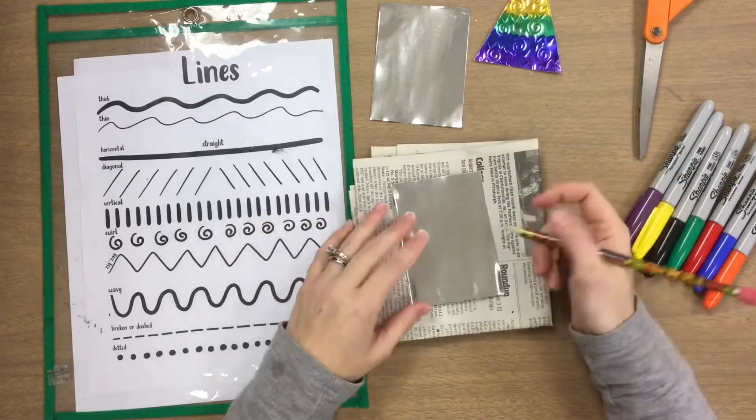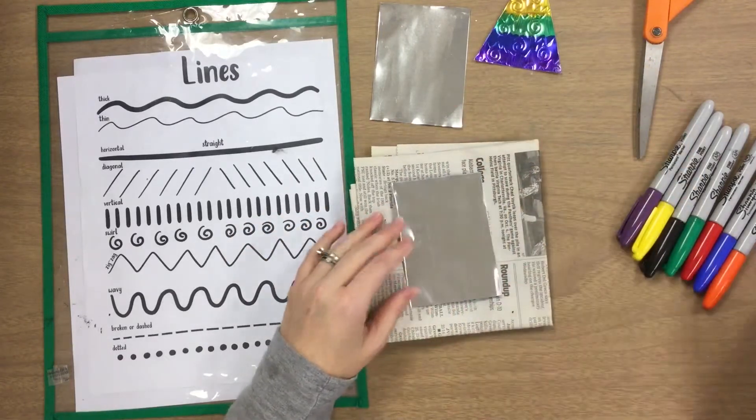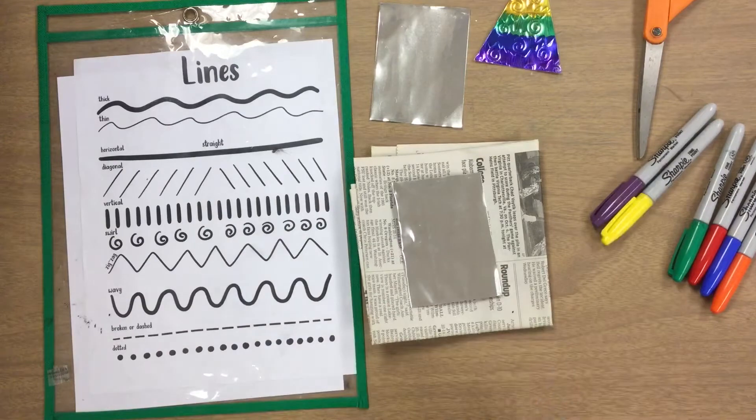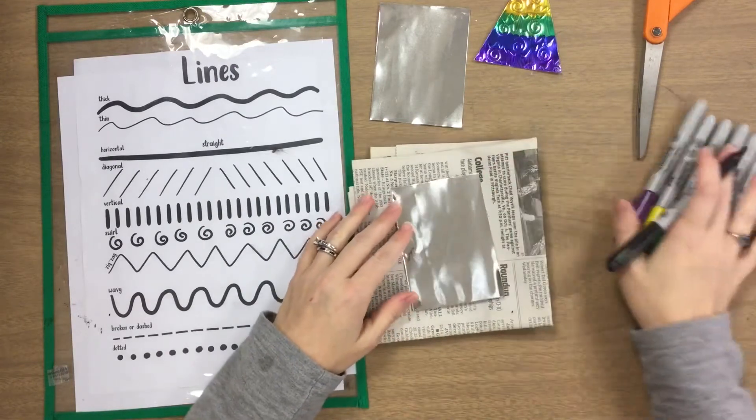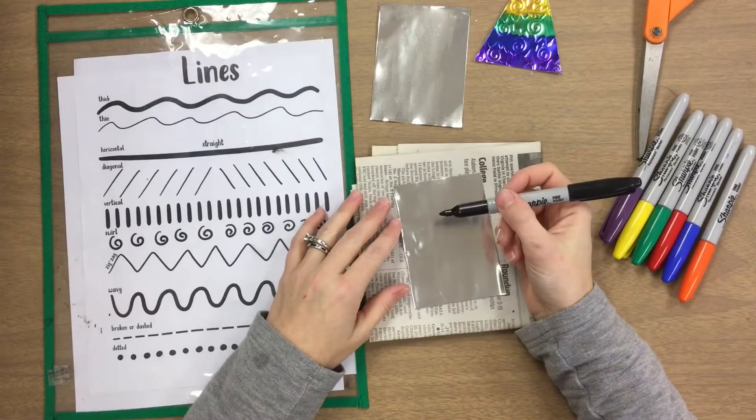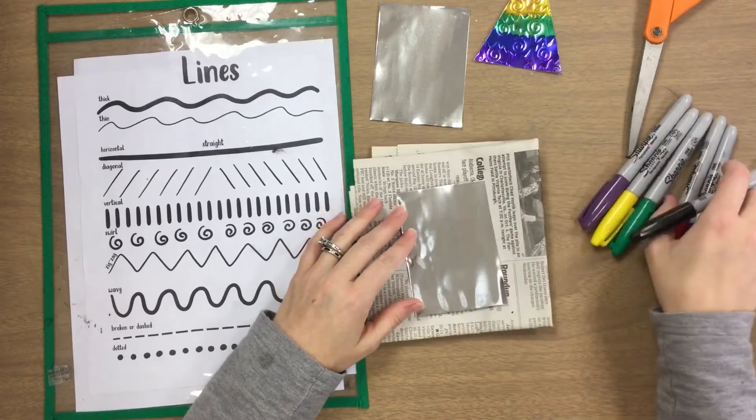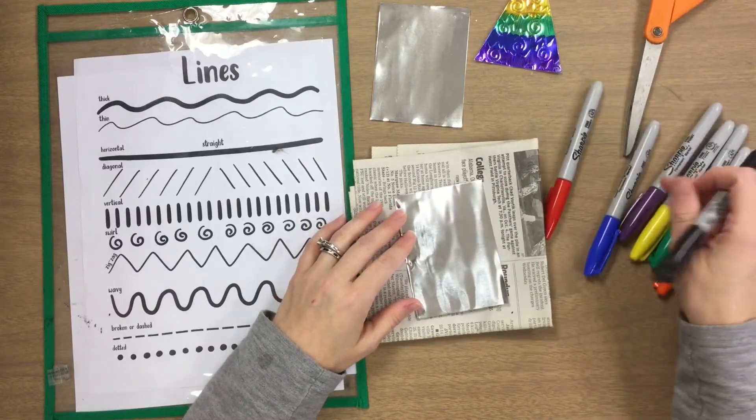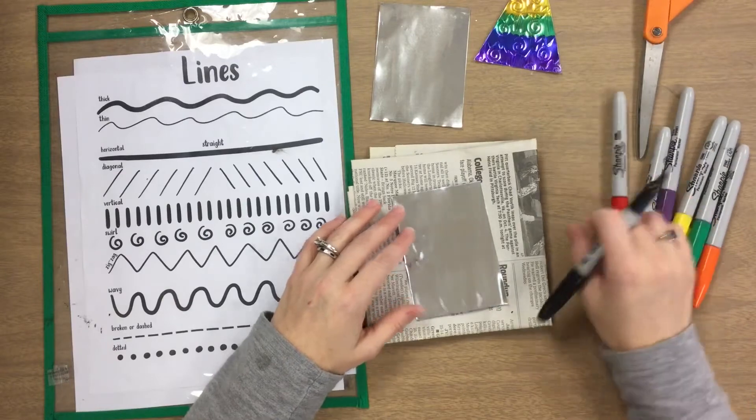Before we decorate our trees, the first thing we need to do is make this into a triangle shape. The easiest way to do that is—you don't have to use black sharpies, just use a darker color like purple, blue, or red.